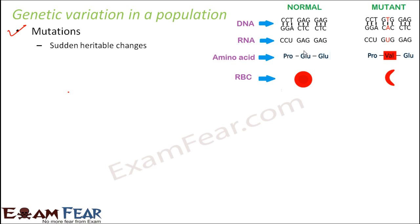In sickle cell anemia, the RBCs — red blood cells — which are normally round in shape, become sickle-shaped. As you can see here, this is the sickle cell RBC and this is the normal round RBC. When RBCs become sickle-shaped, it becomes very difficult for them to travel throughout the body. When they are round, it is convenient for them to move, but when sickle-shaped, they can get stuck, which can give rise to blood clotting and many other complexities.